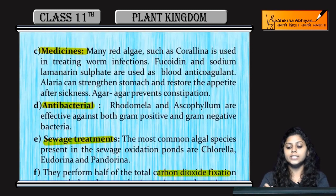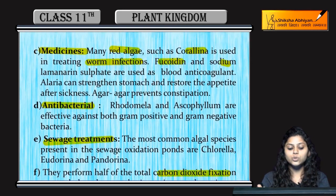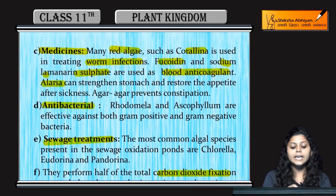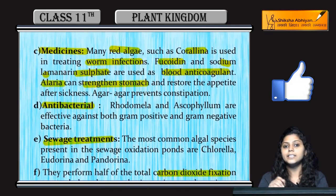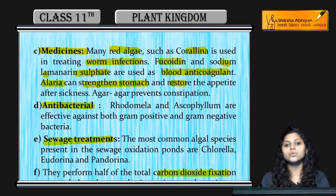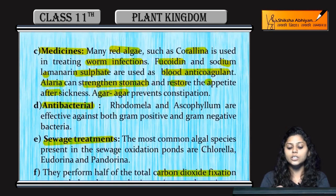For medicinal importance, red algae such as corallina are used for treating worm infections. Fucoidin and sodium laminarine sulfate are used as blood anticoagulants. Elleria strengthens the stomach and improves digestion and restores appetite after sickness. Agar agar is very common and prevents constipation.